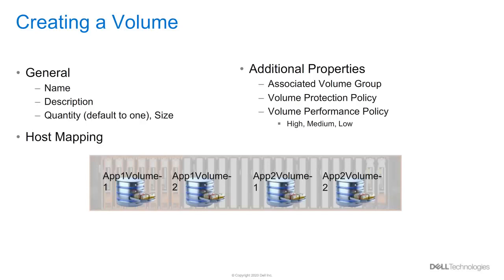This distribution of system processing power only happens if the system becomes fully utilized. Otherwise, there is no difference between resources with different performance policies. Users can also select hosts to map the volume to at the same time of creation, or can choose to map the volume at a later time.